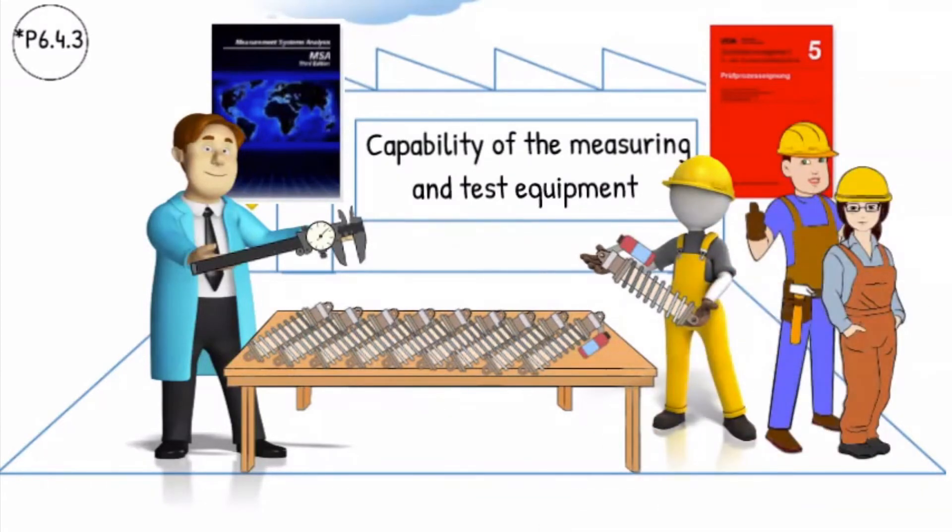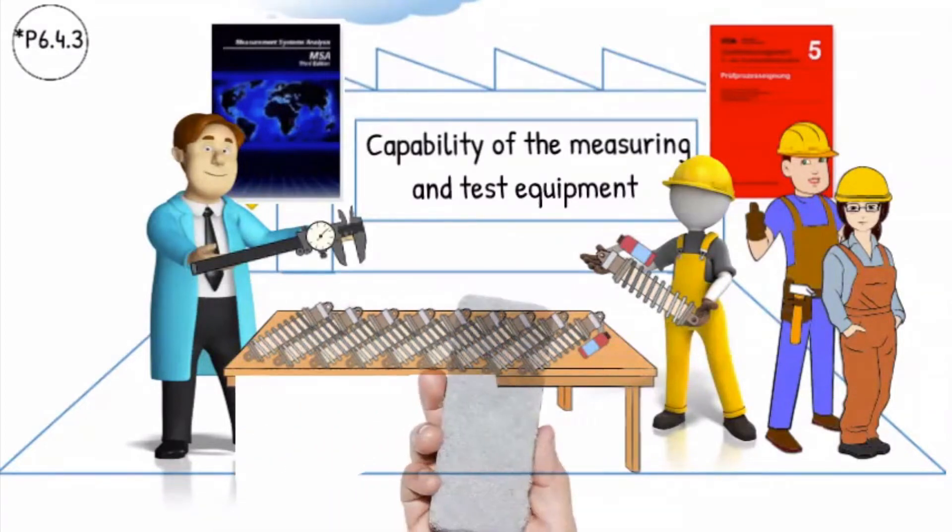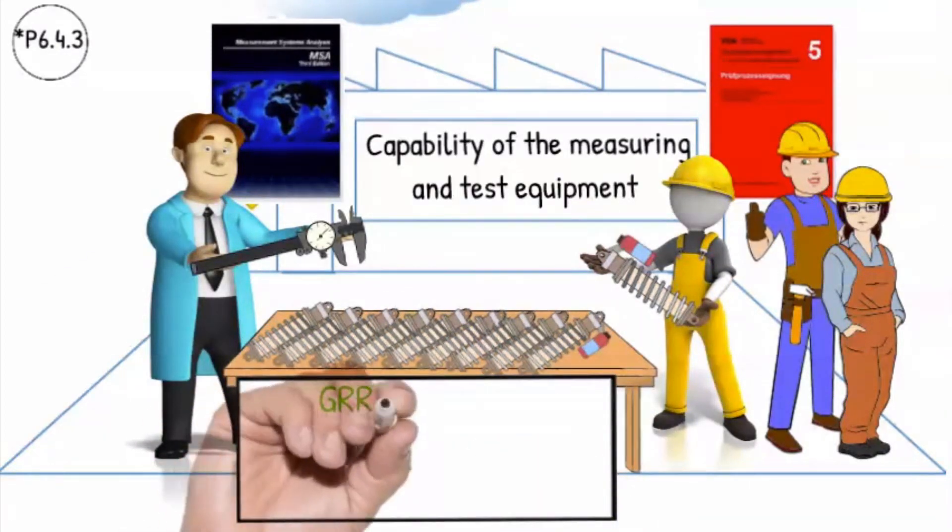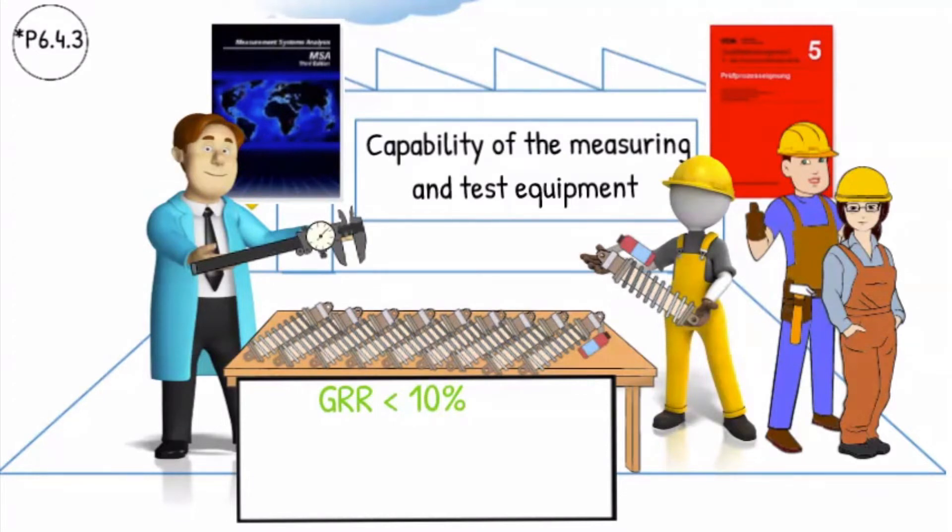You will ask 2 to 3 operators to measure the 10 reference test objects 3 times. The GRR result must be below 10% according to AIAG-GMSA guide to be acceptable. The result between 10% and 30% is marginally acceptable, and above 30%, it is rejected.